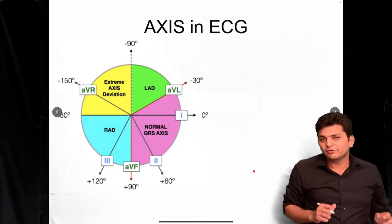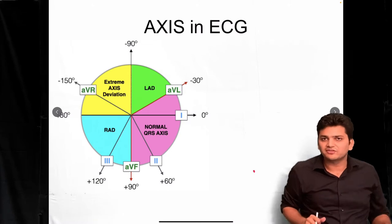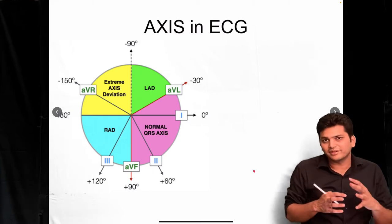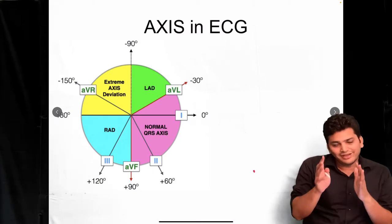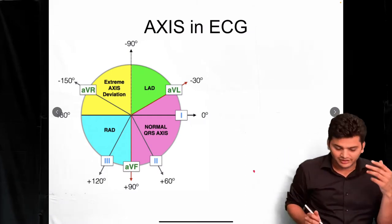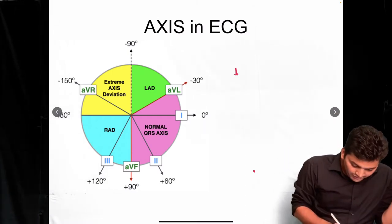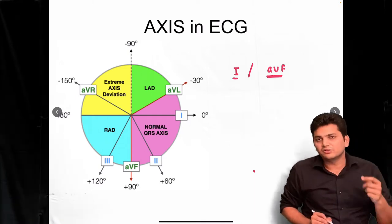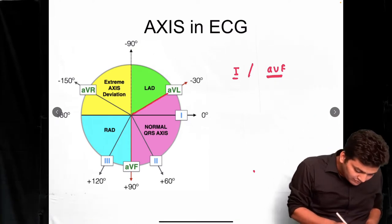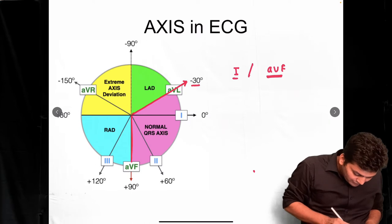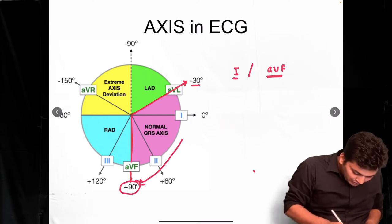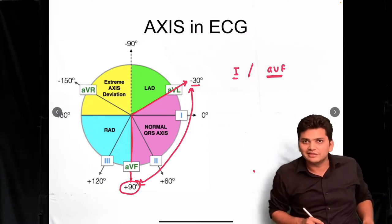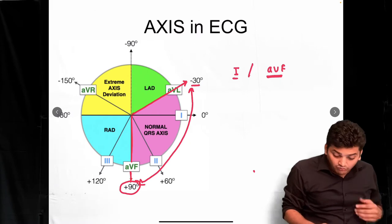Welcome, in this video we are going to discuss how to find out the axis of the ECG. My agenda is not to explain the entire concept — what is important is how to find out whether the axis is normal, left axis, or right axis. To find out the axis, we are going to look at two leads: Lead I and the AVF lead. The normal axis is from minus 30 to plus 90.